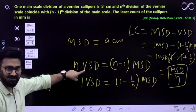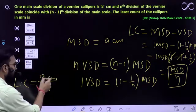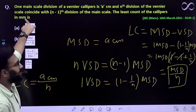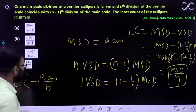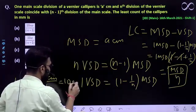This is the least count we are getting. n is nothing but divisions on the vernier scale. 'a' centimeter is given. You need to find the answer in millimeters. One centimeter equals 10 millimeters, so putting that here, it would be 10a/n.